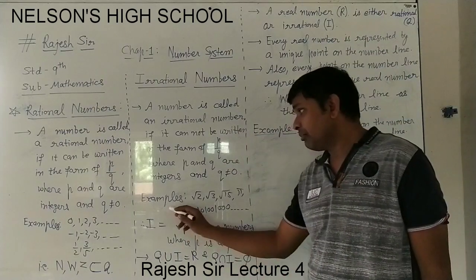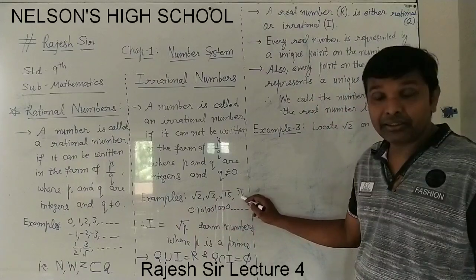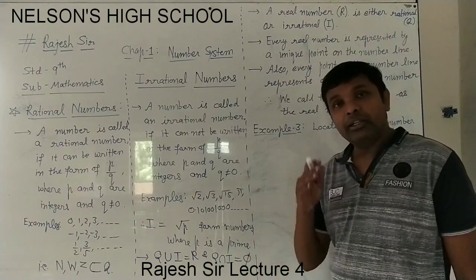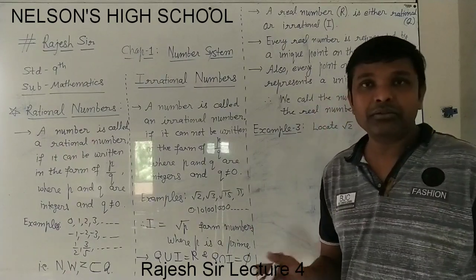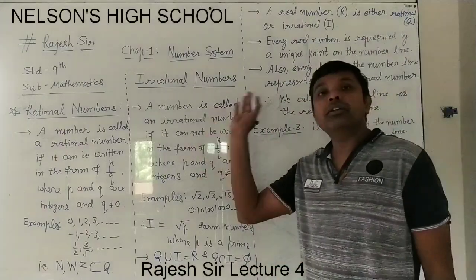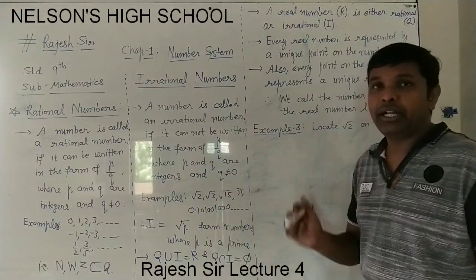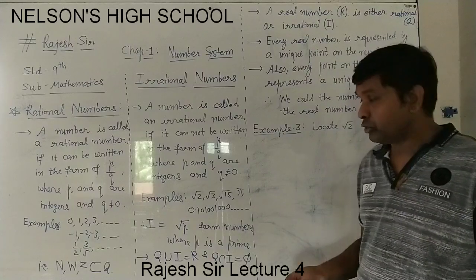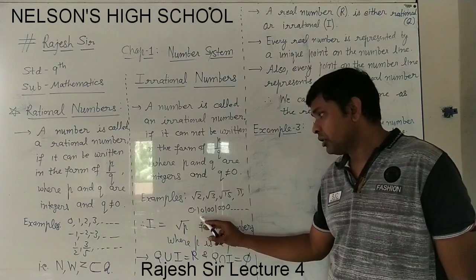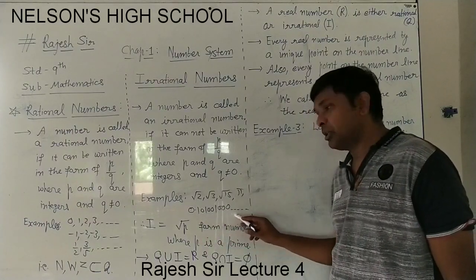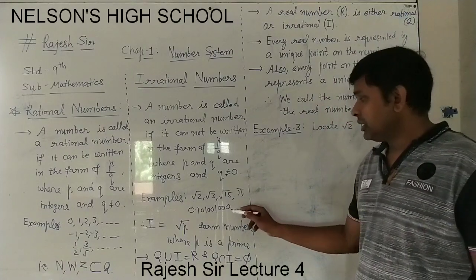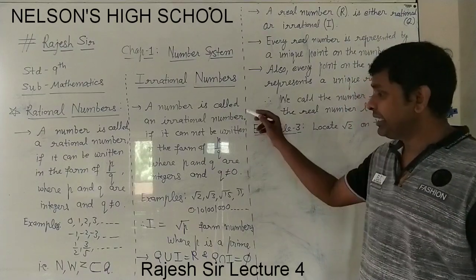Examples of irrational numbers are root 2, root 3, root 15, and pi. About pi, you know the value is not determined yet — we are finding it, and the exact value we don't have. In decimal form, pi has infinitely many digits, never ending and not repeating any pattern — it is non-recurring. One more example is 0.10100000..., which is also non-terminating. So this type of number is called an irrational number.